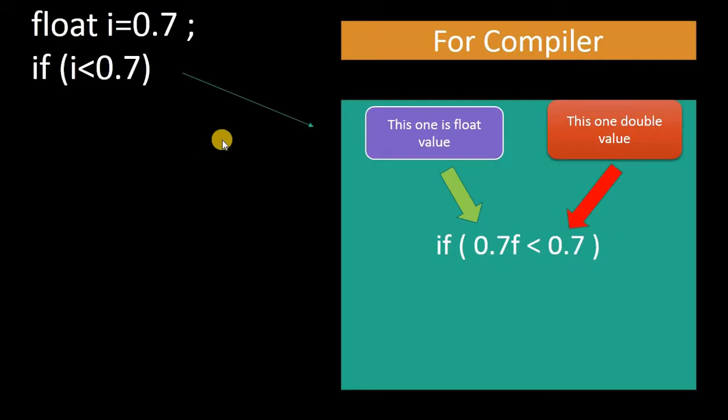So what is the reason behind it? Why does this if condition get executed? If you take that program, the two most important lines are: float i equal to 0.7, and if i less than 0.7. As the value of i is in float, that means i equal to 0.7f - this f indicates this is a float value. By default, compiler takes any decimal value as double value.